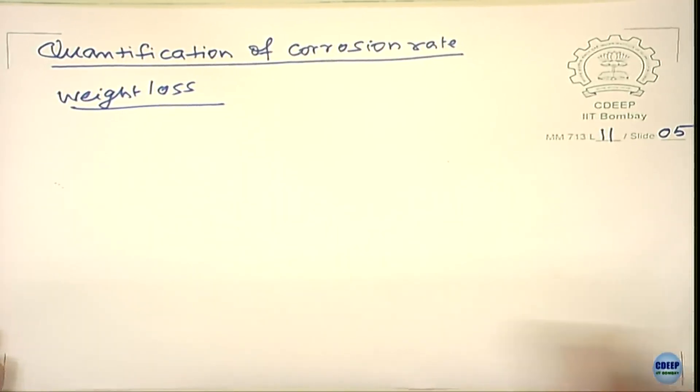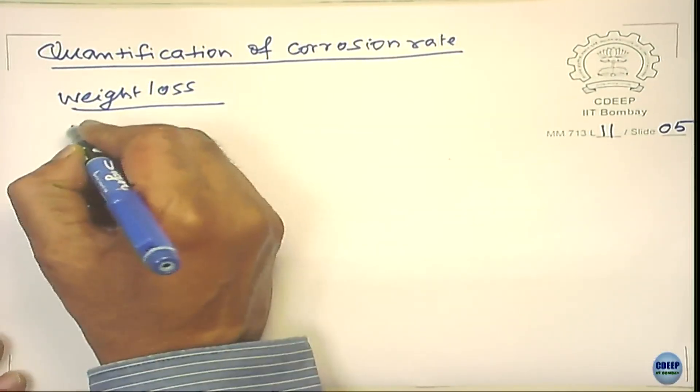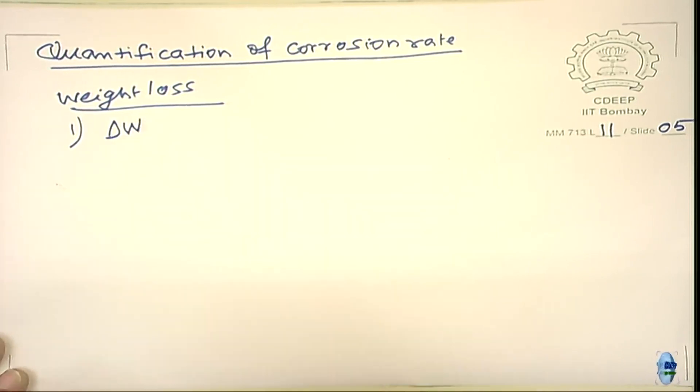How do you determine the corrosion rate in the lab? You take a specimen of known dimensions and immerse it in an electrolyte or corrosive environment of interest for a known period of time, then take it out and measure the weight again. The change in weight is the weight loss, measured over a given time of exposure T. You also need to know the surface area.